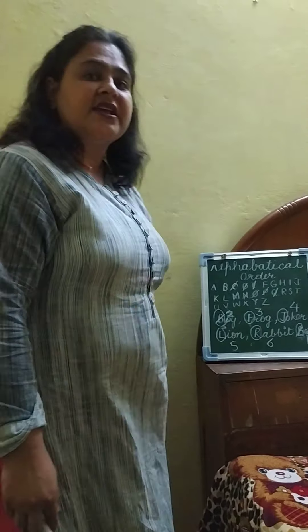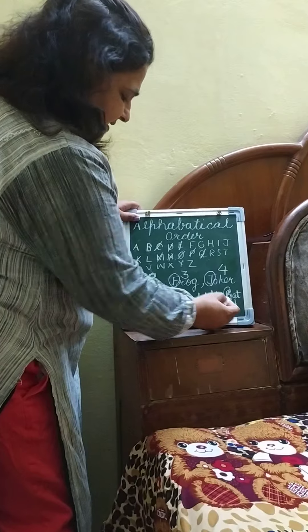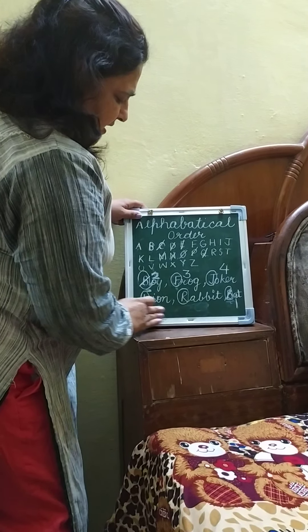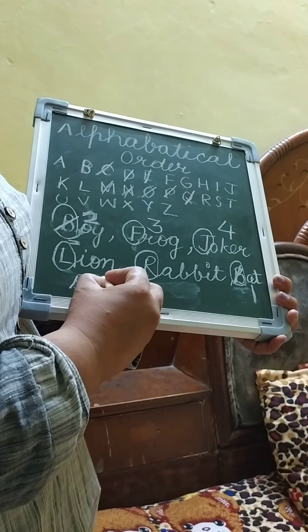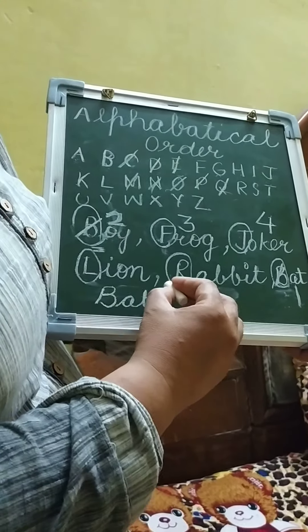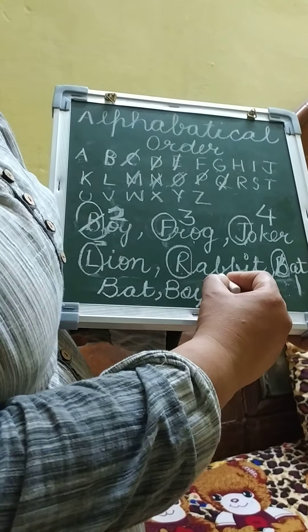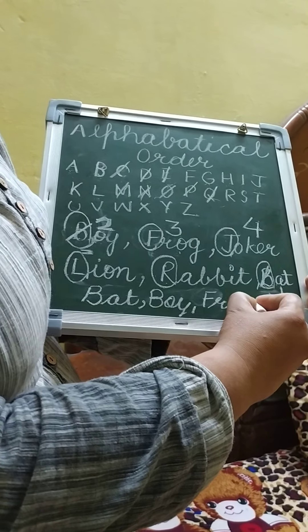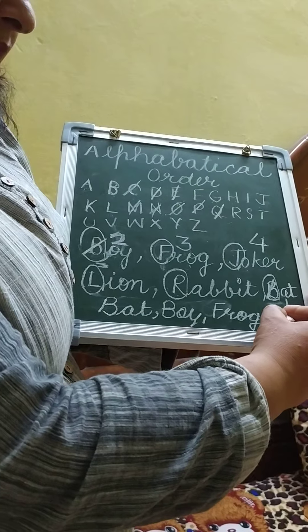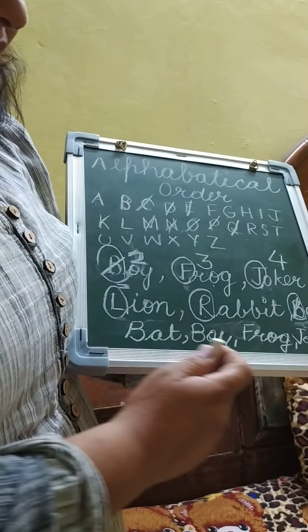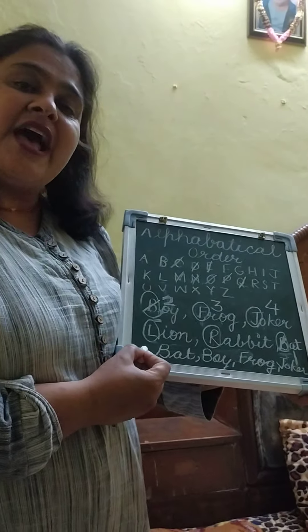So we got these numbers. Now what to do? Write number 1 first — that is 'bat.' Number 2 — 'boy.' Number 3 — 'frog.' Number 4 — 'joker.' Number 5 — 'lion.' Number 6 — 'rabbit.' Write like this according to the numbers. This is the very easiest way to find out the alphabetical order.